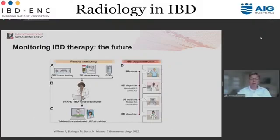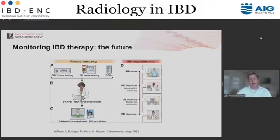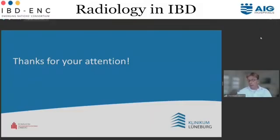My last slide: monitoring IBD in the future. With more intense monitoring, we will have more remote controlling at home — CRP, fecal calprotectin — and on a frequent basis patients will come in for point-of-care intestinal ultrasound. It's quick, easy, non-invasive, and once you have the machine, much cheaper than other imaging methods. MRI is a very good imaging method, but IUS can fill in for short-term point-of-care assessment, while MRI remains important for comprehensive evaluation.